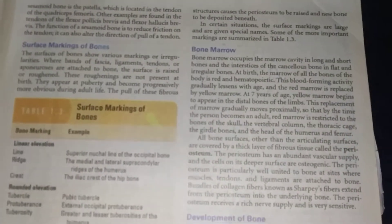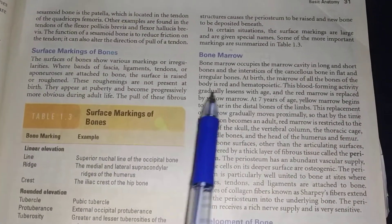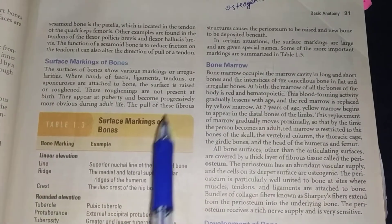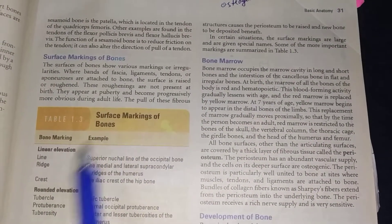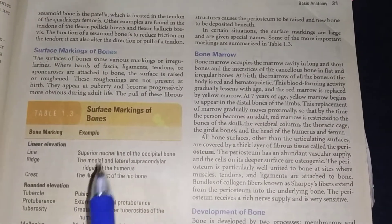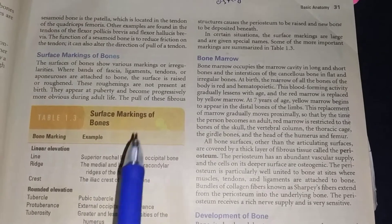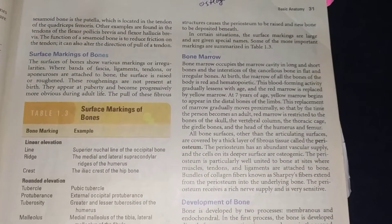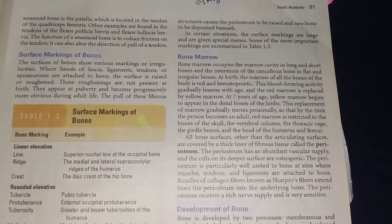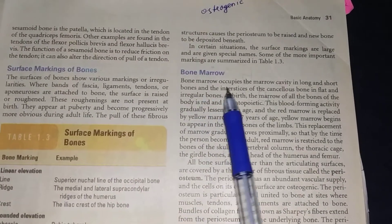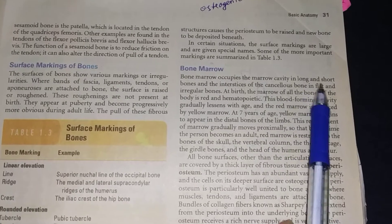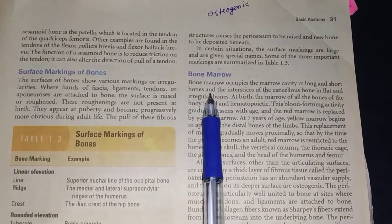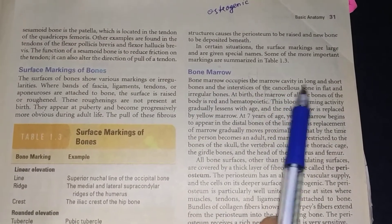Today we discuss bone marrow. Bone marrow is most important and related to physiology, so don't be confused in anatomy. In bone marrow we have red blood cells, white blood cells, lymphocytes — basically it has formation, meaning production. Hematopoietic stem cells produce different kinds of red blood cells, white blood cells, lymphocytes and other things. Bone marrow occupies the marrow cavity in long and short bones, and the interstices of flat and irregular bones.